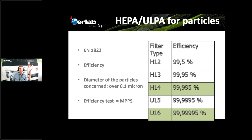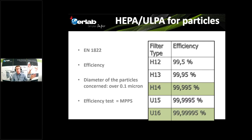When you use H14 filters, you can estimate that the H14 filter is two to three times more efficient than the containment of the enclosure itself. This means that if there is any risk of leakage, it is most of the time due to containment or face velocity, and never to the filters, because the filters are much more efficient than the containment when we talk about particles.